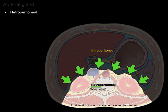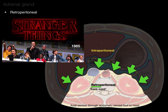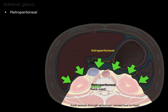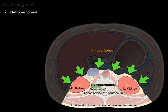The prefix retro means in the past or backward — like a retro TV series such as Stranger Things, set in the mid-1980s. Retroperitoneal means organs behind the peritoneum. This includes the right and left kidneys, the ureters, and the adrenal glands — right and left.